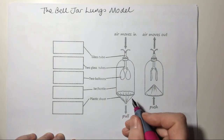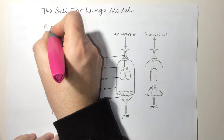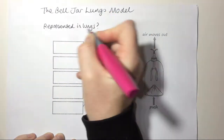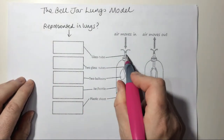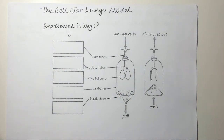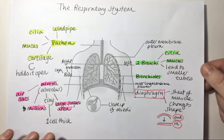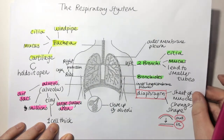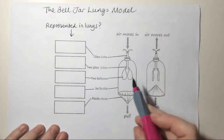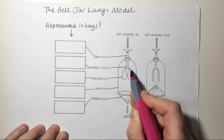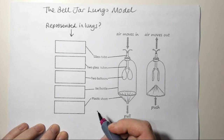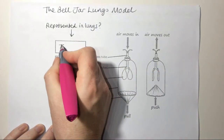First of all, we need to think: what does the model represent? Looking back at what we started with in the first video, we've got one tube going into two tubes going into two lungs with a sheet of muscle. We can quite easily relate that to here. We've got one tube going into two tubes going into two structures, and we've got a sheet of muscle — or plastic in this case. The single glass tube represents the trachea.